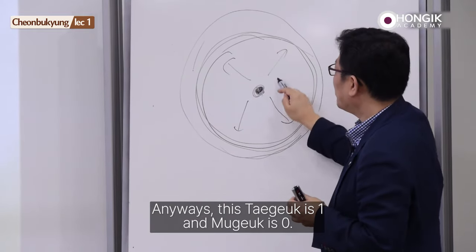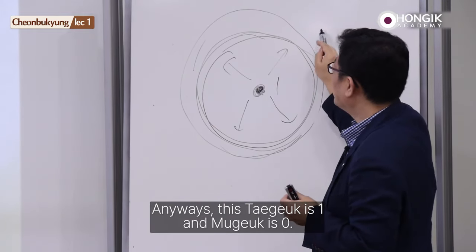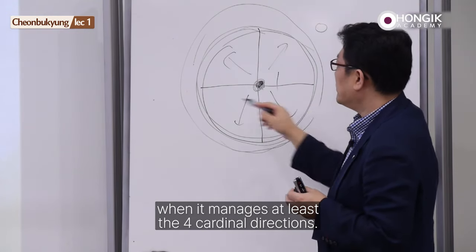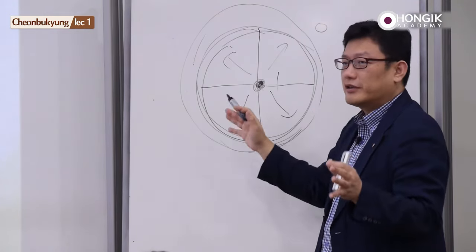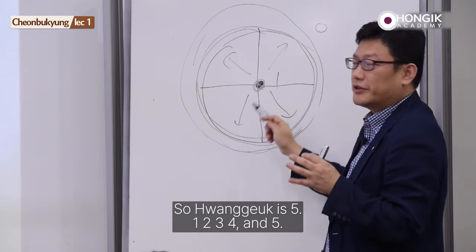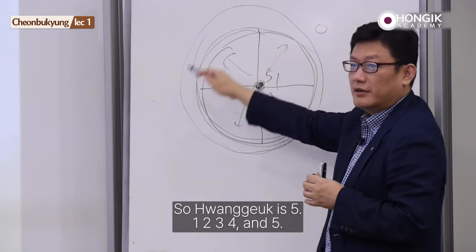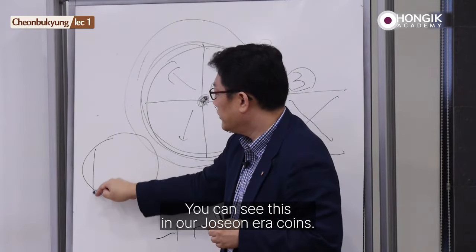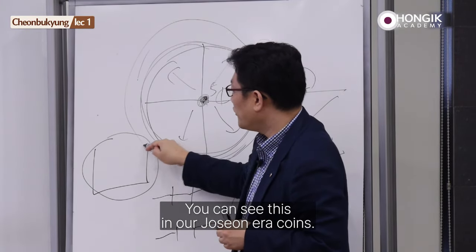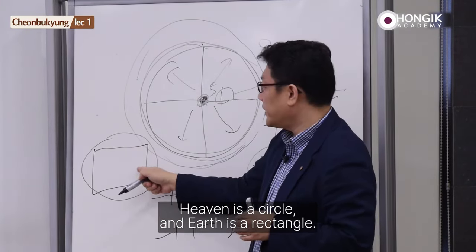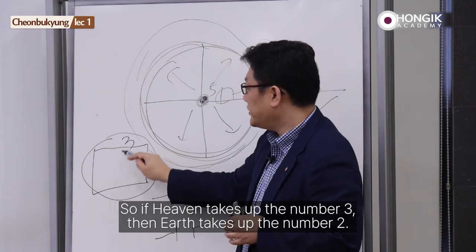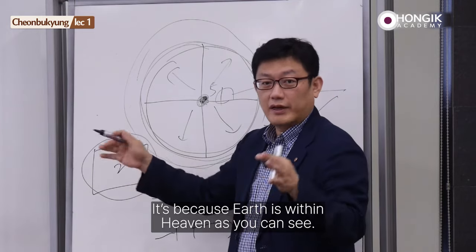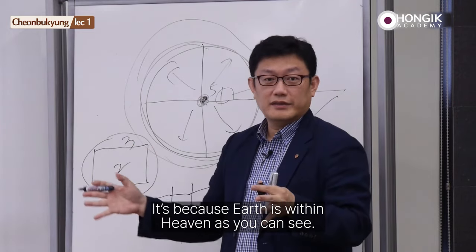Anyways, this Taeguk is one, and Mugok is zero. But for Huangguk, we only call it Huangguk when it manages at least the four cardinal directions. So Huangguk is five. You can see this in our Joseon era coins. Heaven is a circle, and Earth is a rectangle. So if Heaven takes up the number three, then Earth takes up the number two. It's because Earth is within Heaven, as you can see.